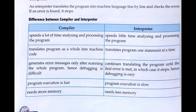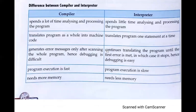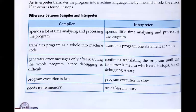The interpreter continuously translates the program line by line. If a mistake is made in line one, the error message displays immediately and execution stops at that point. Program execution is fast for the compiler because it processes all the program at once. For the interpreter, it runs line one, then line two, and so on. The compiler needs more memory, while the interpreter needs less memory.